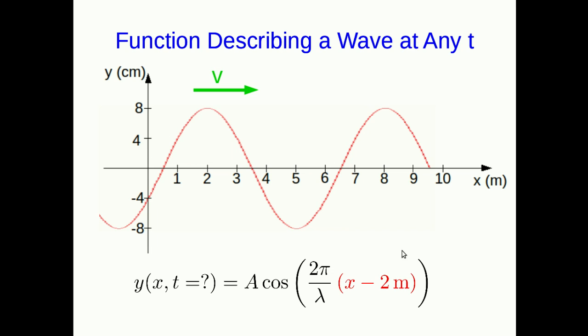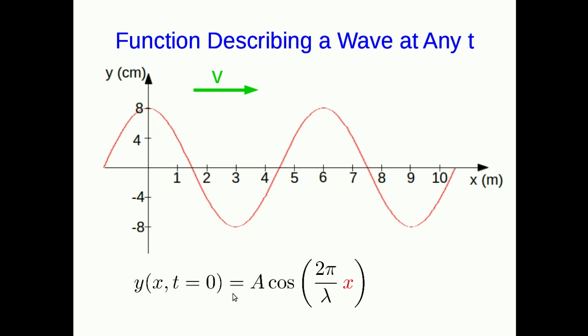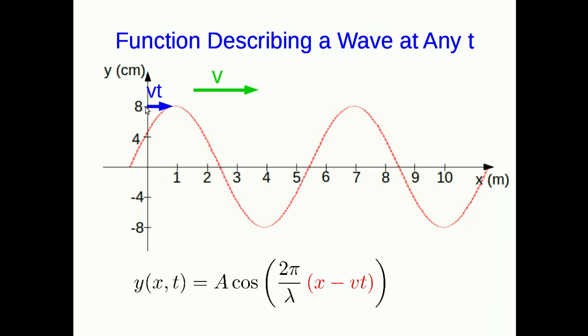Okay, but we don't want to just plug in distances. We want to have a function that works for all times. So, starting from here, we now want to shift over by the right amount for time t. Well, if you know how fast the wave is moving, that's easy, because at time t, it will have moved a distance vt, and so all you have to do is replace the x with x minus vt, and that gives you the function you need.